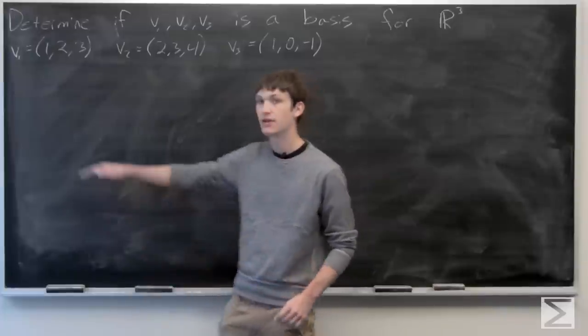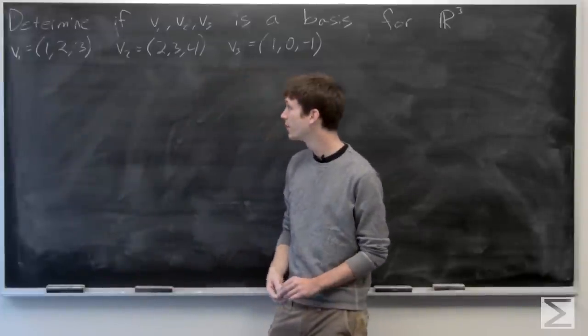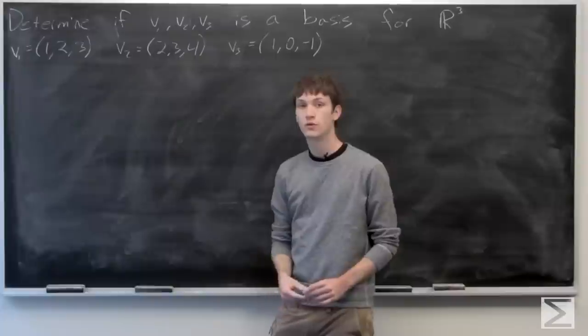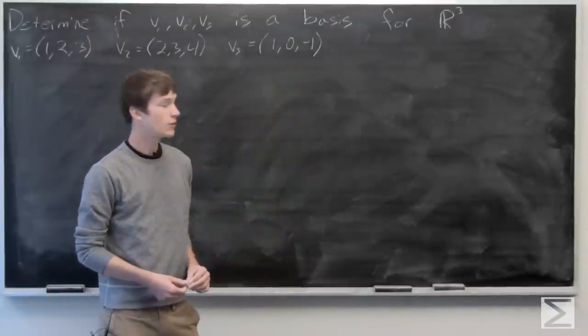And we're given that v1 is the vector 1, 2, 3, v2 is 2, 3, 4, and v3 is 1, 0, negative 1.